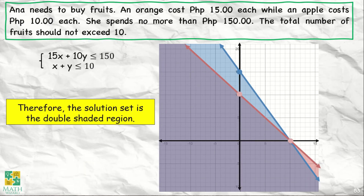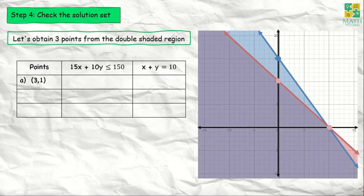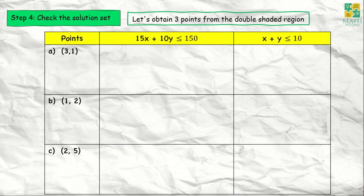Therefore, the solution set is the double-shaded region. Next, we will check our solution set. Let's obtain 3 points from the double-shaded region: (3, 1), (1, 2), and (2, 5). We will substitute these points into our linear inequalities to check if the results are true or false.